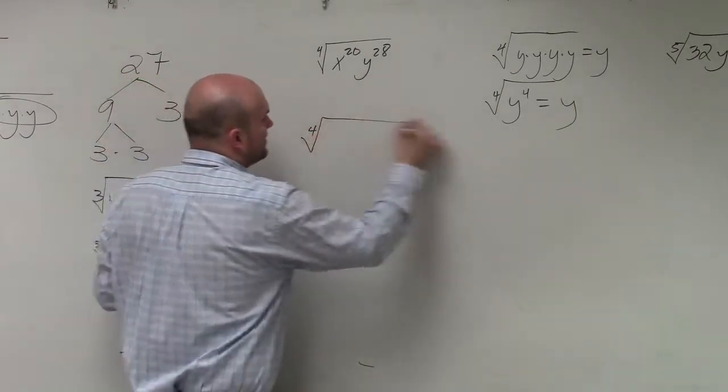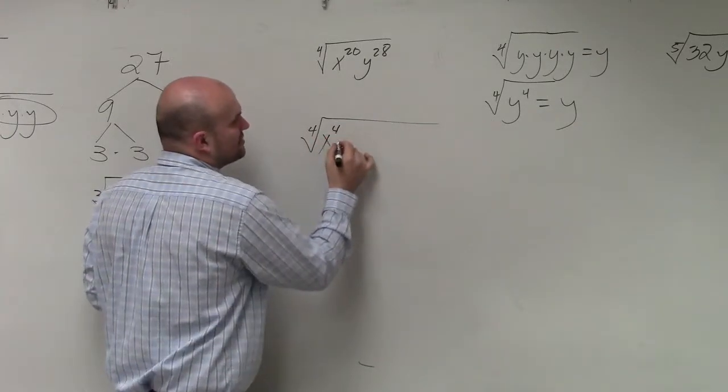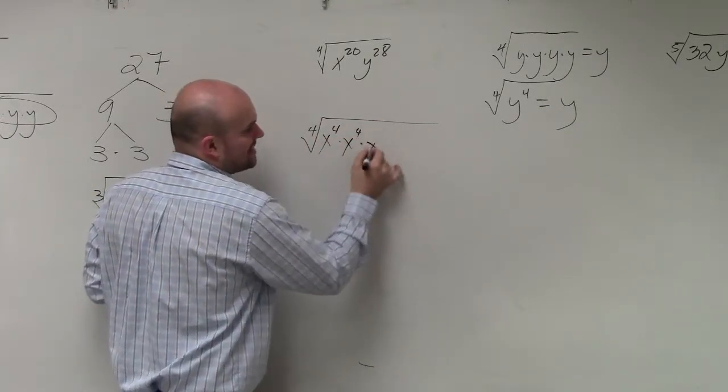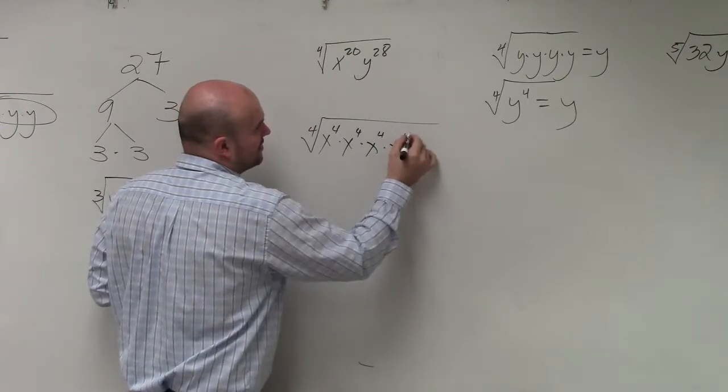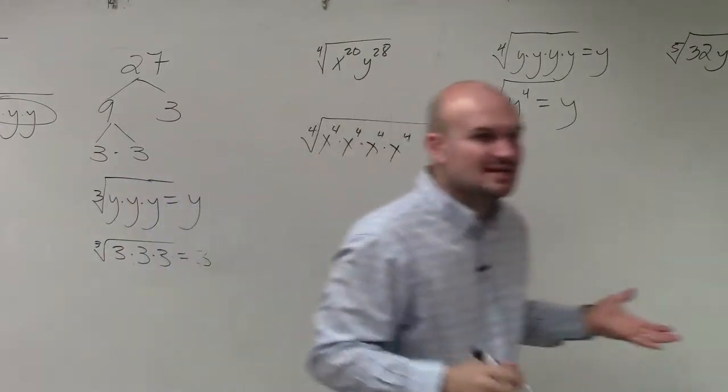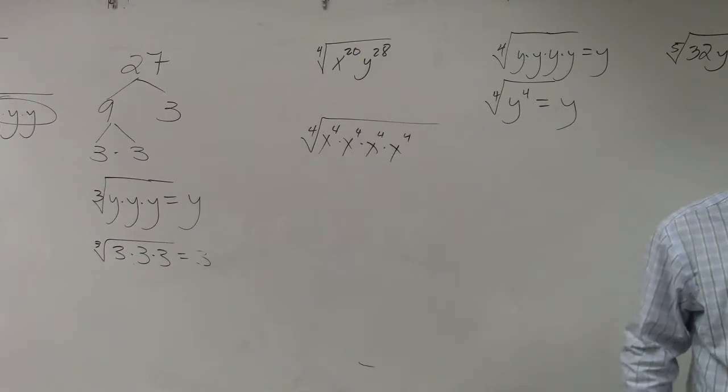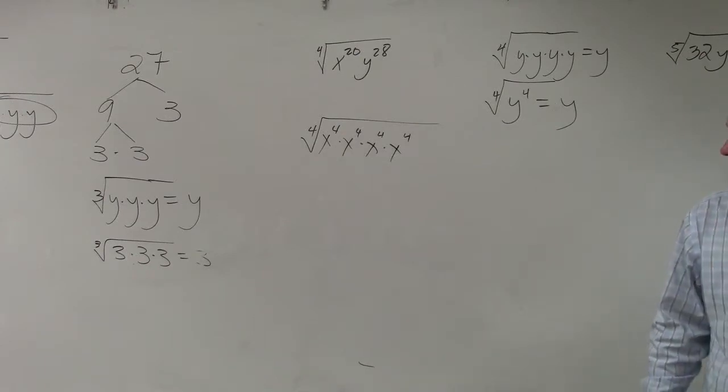So the fourth root, I can rewrite this as x to the fourth times x to the fourth times x to the fourth times x to the fourth. Now you guys can see I'm only multiplying x to the fourth by itself five times.